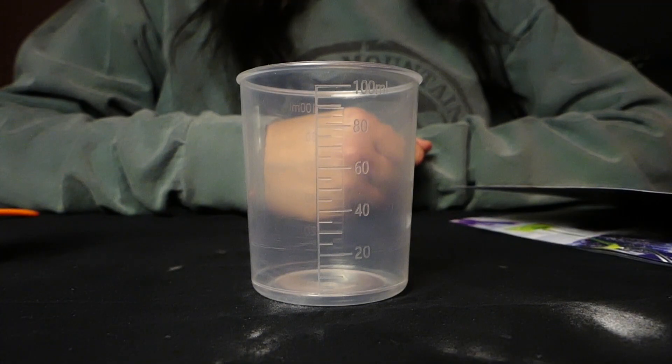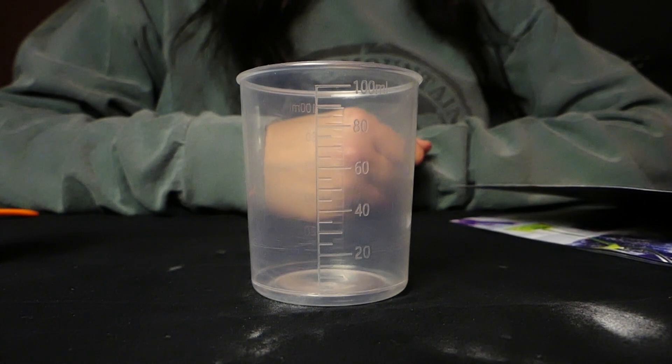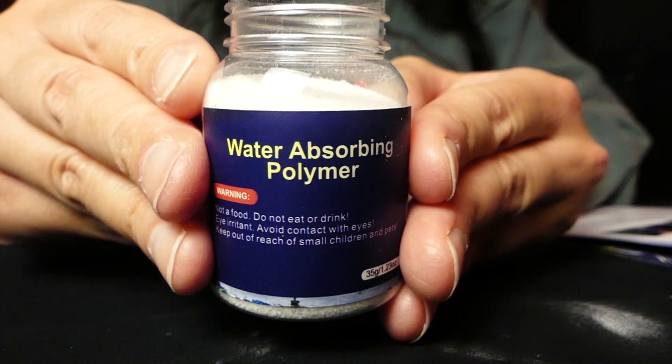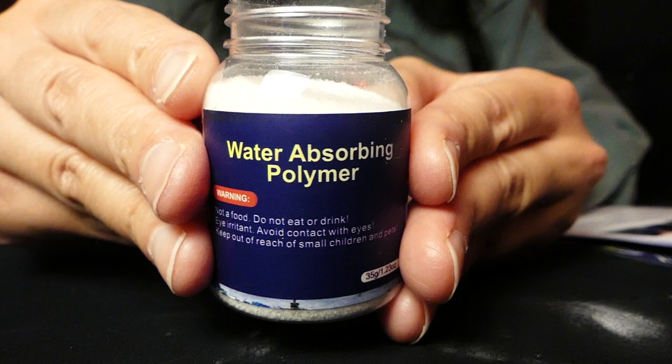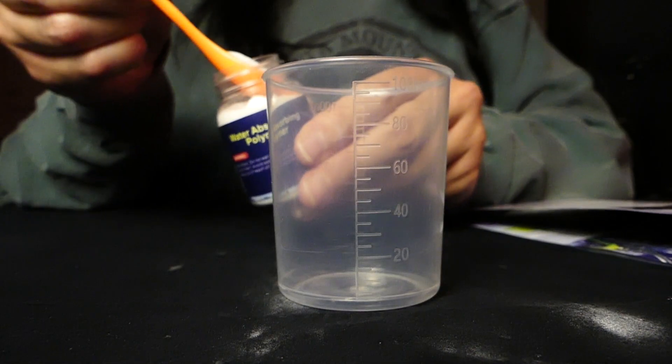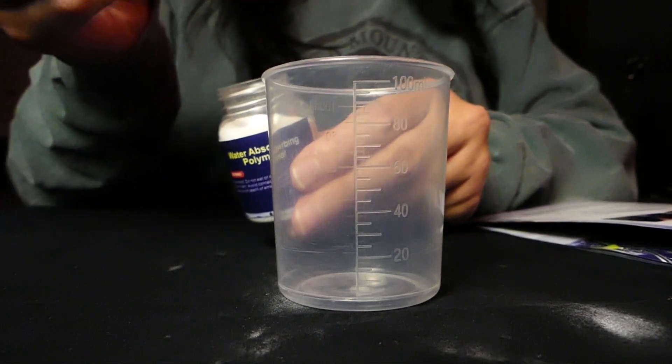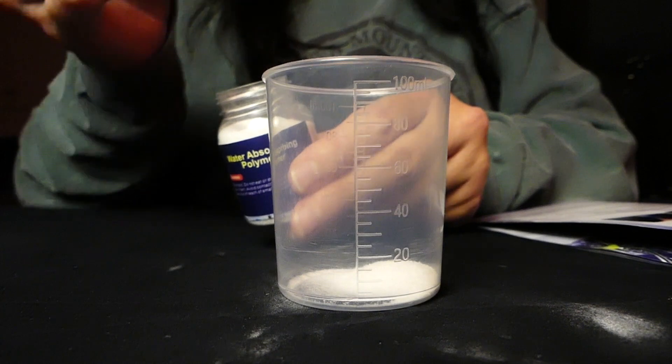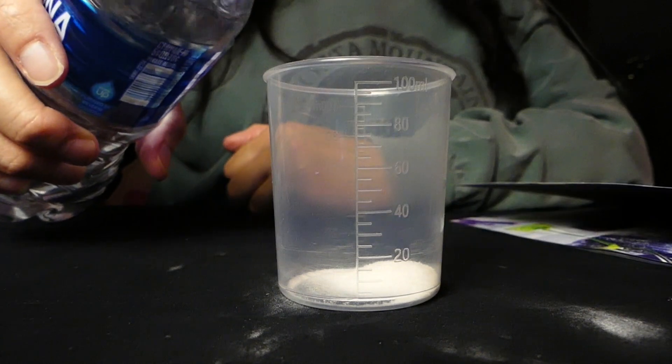Step 1 says pour one sample spoon of water absorbing powder into the measuring cup and add 20 milliliters of water. Let's do it. And here's the powder. 20 milliliters.